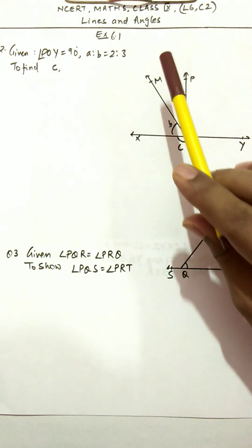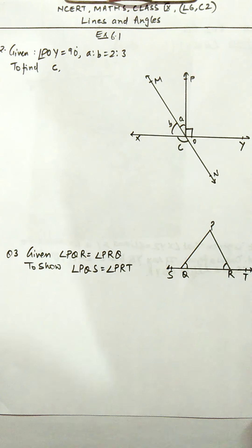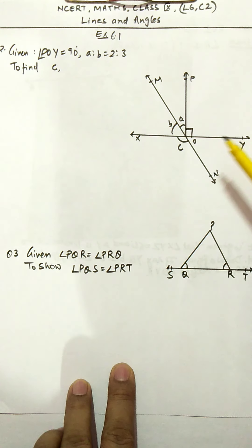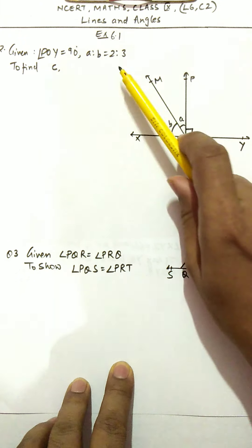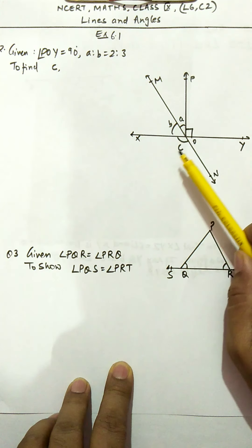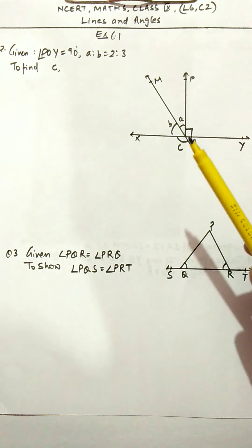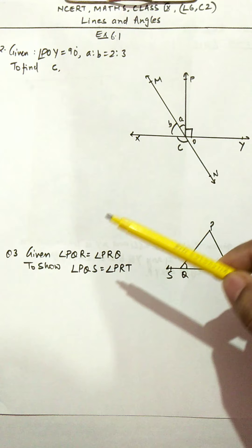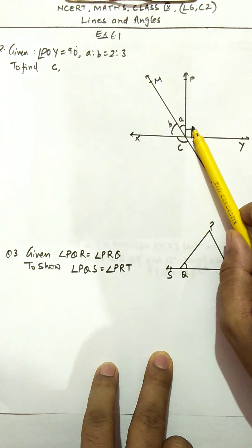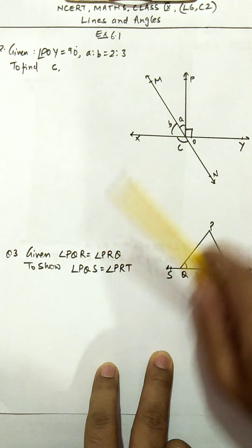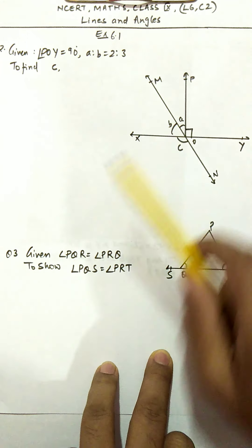Now we discuss Exercise 6.1. Question 2: given that POY = 90° and the ratio of angle a to angle b is 2:3, we have to find angle c. First, angles a, b, and POY are linear angles, so their sum is 180°. Therefore a + b + 90 = 180, which gives a + b = 90.